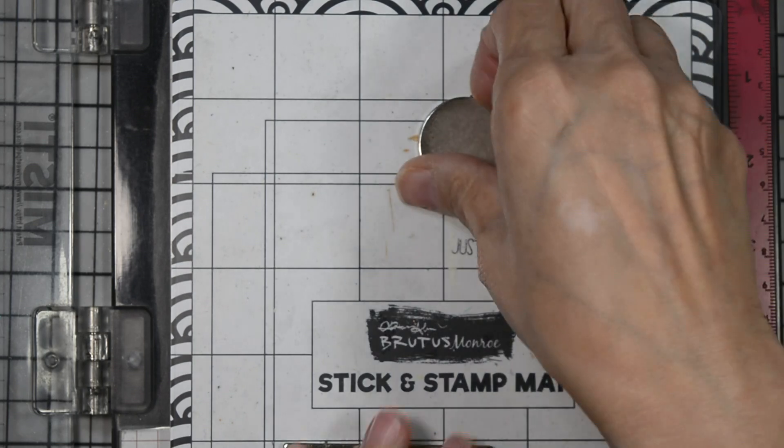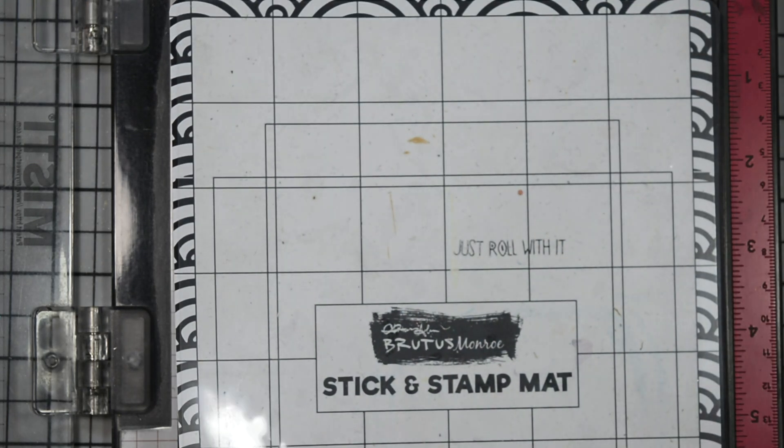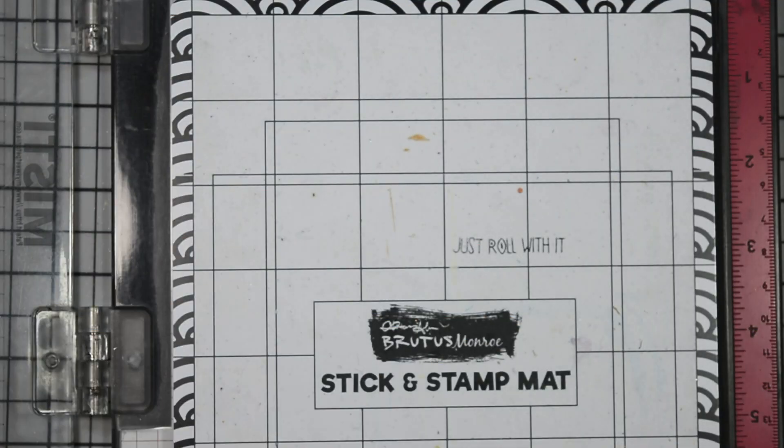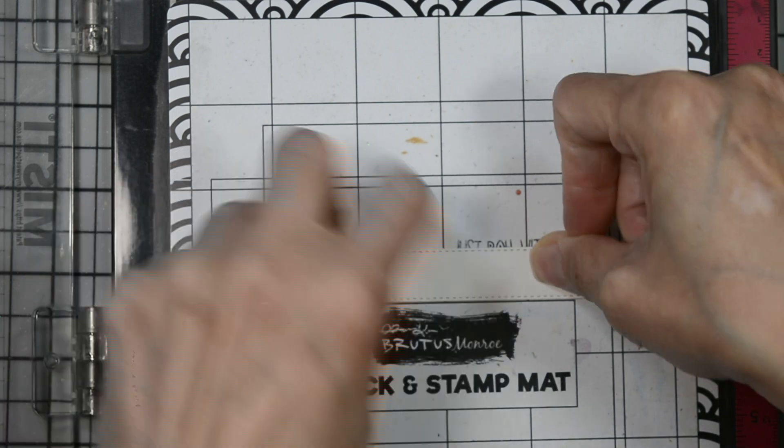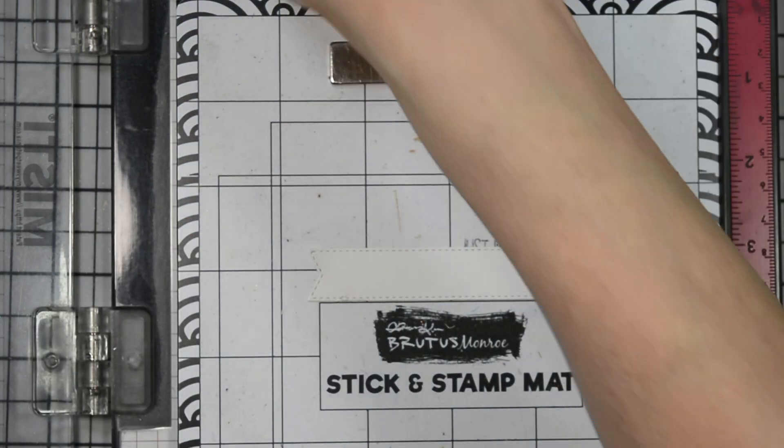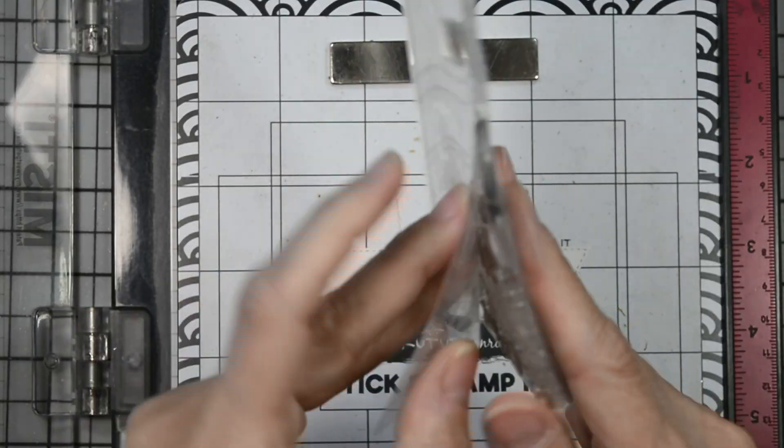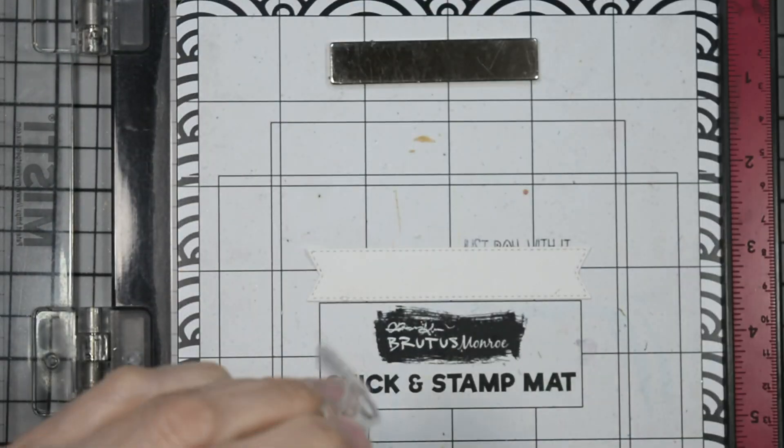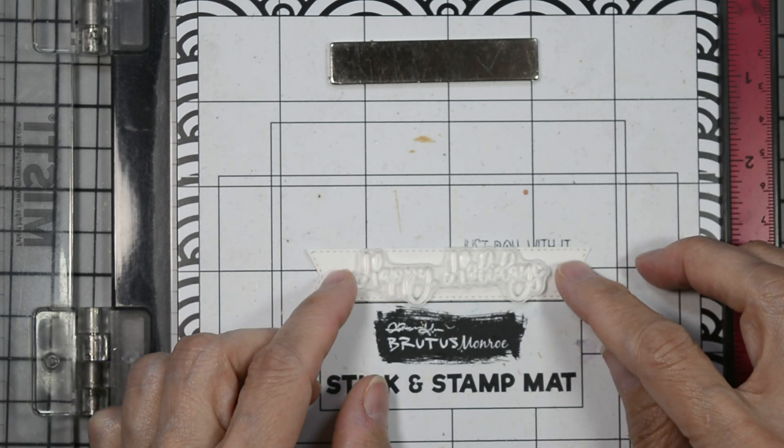I'm going to bring in my stamping platform. It has a sticky mat in it. And I'm going to remove the protective layer here so we can start stamping. I'm going to take the sentiment strip and line it up with the grid of the sticky mat so that it'll hold it in place and I know that it's straight. Get my sentiment.